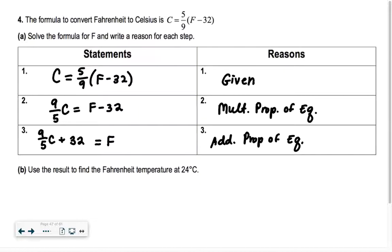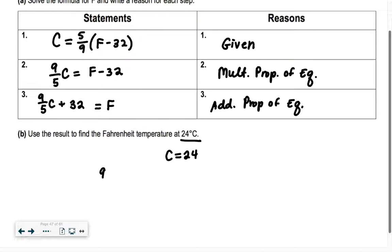So it says use the result to find the Fahrenheit temperature at 24 degrees Celsius. So that means our C value is 24. We want to find F. So we're going to plug in C is 24 to find what F is. So we're going to do 9 fifths of 24. And then we're going to add 32. Did you guys get 75.2? I don't need to write degrees Fahrenheit. It's fine. You guys know it's degrees Fahrenheit when it's F equals, right? I don't want to confuse you with two Fs. Does that make sense?